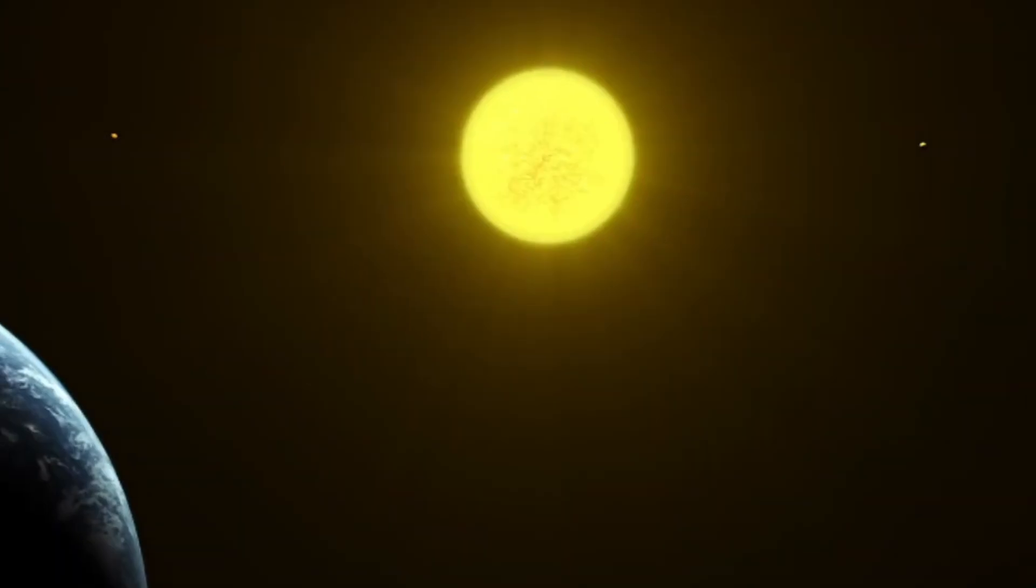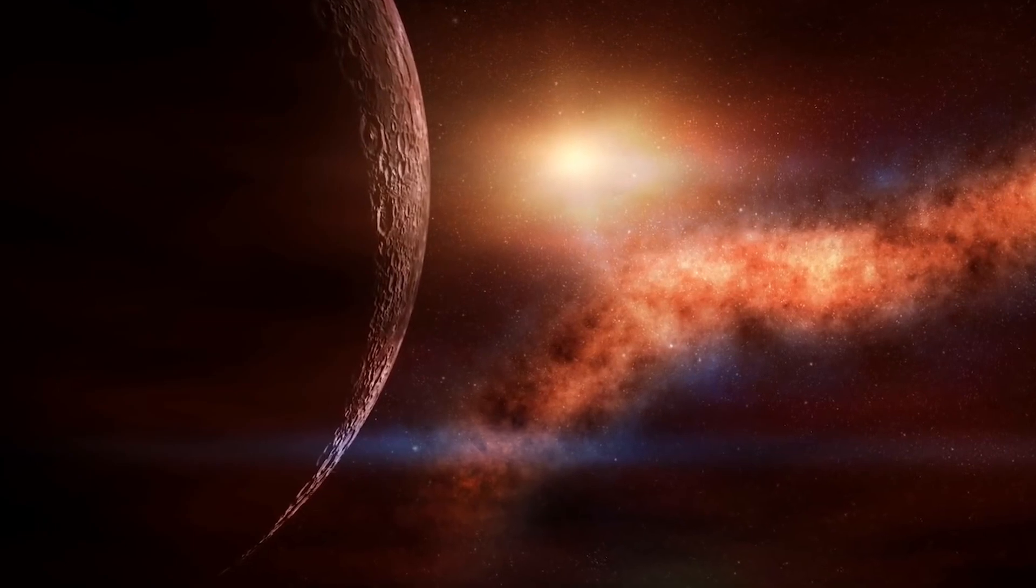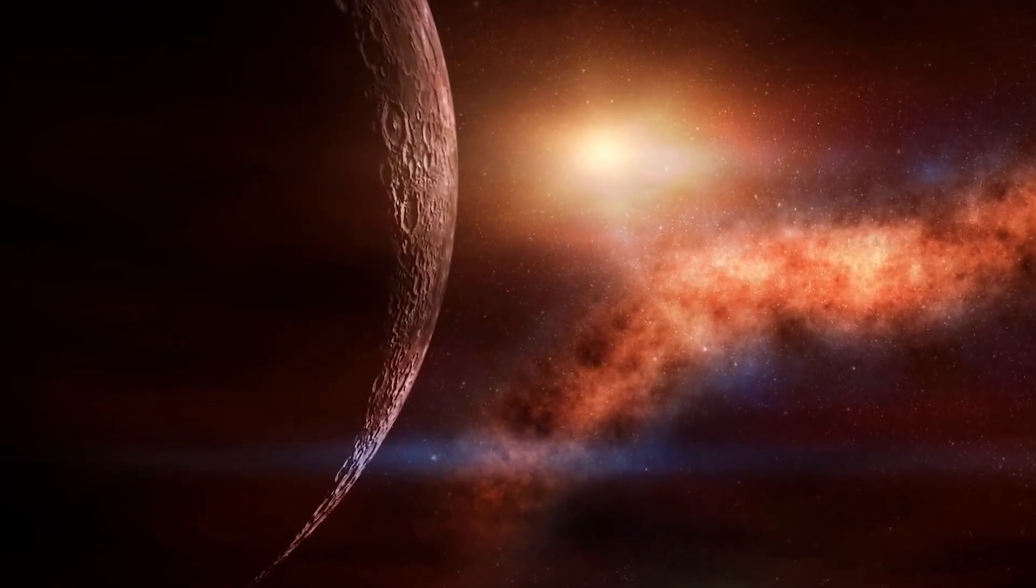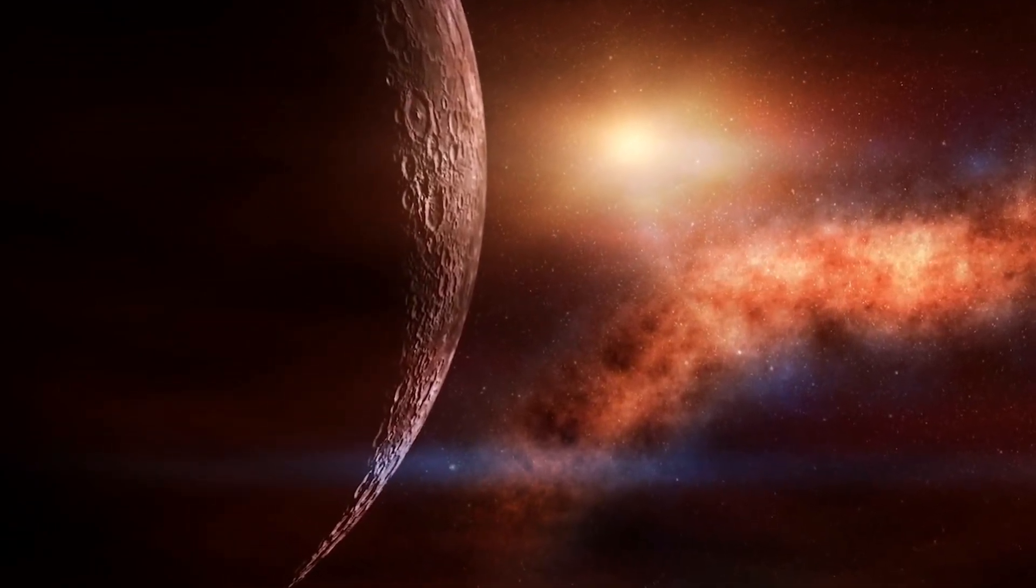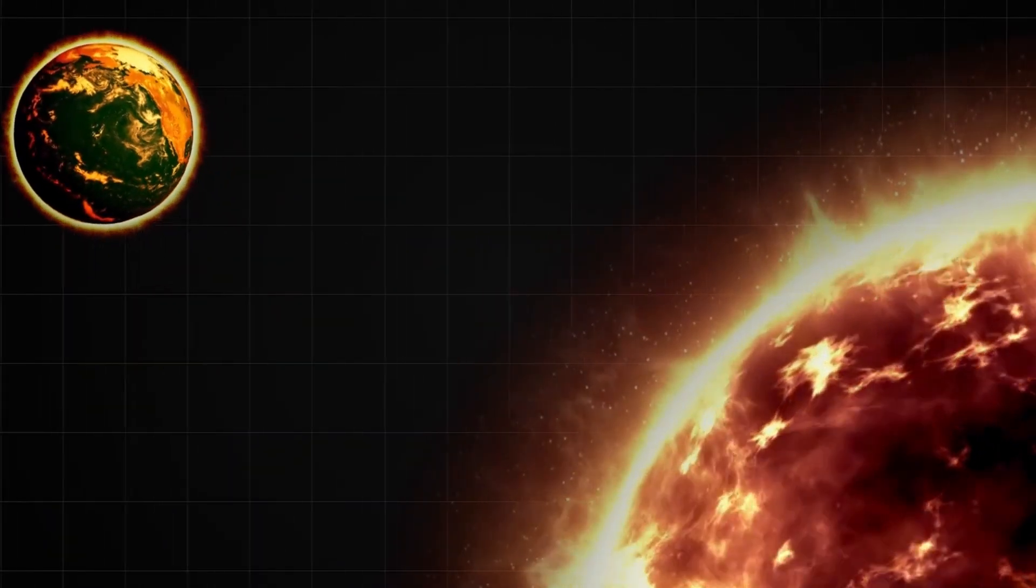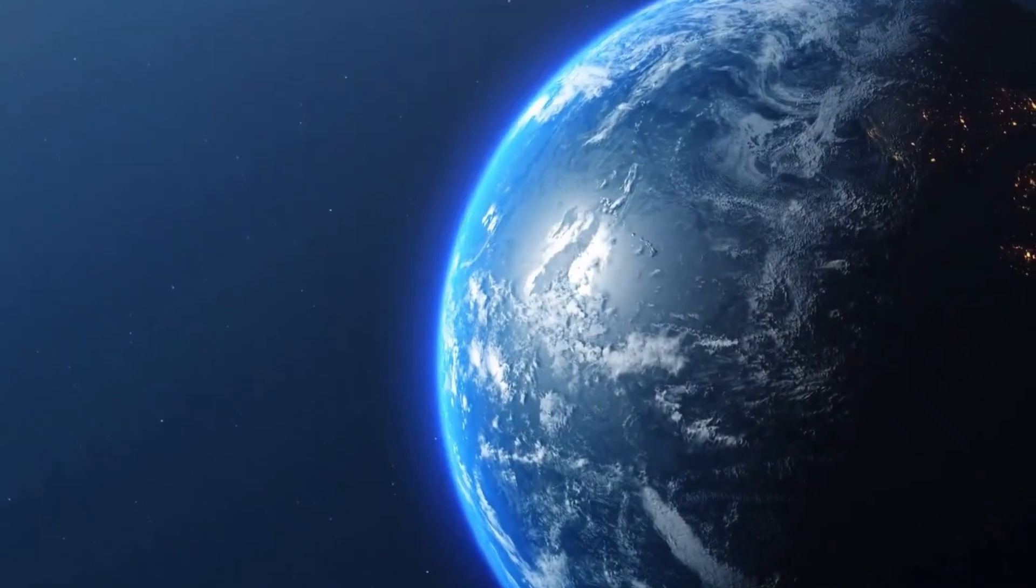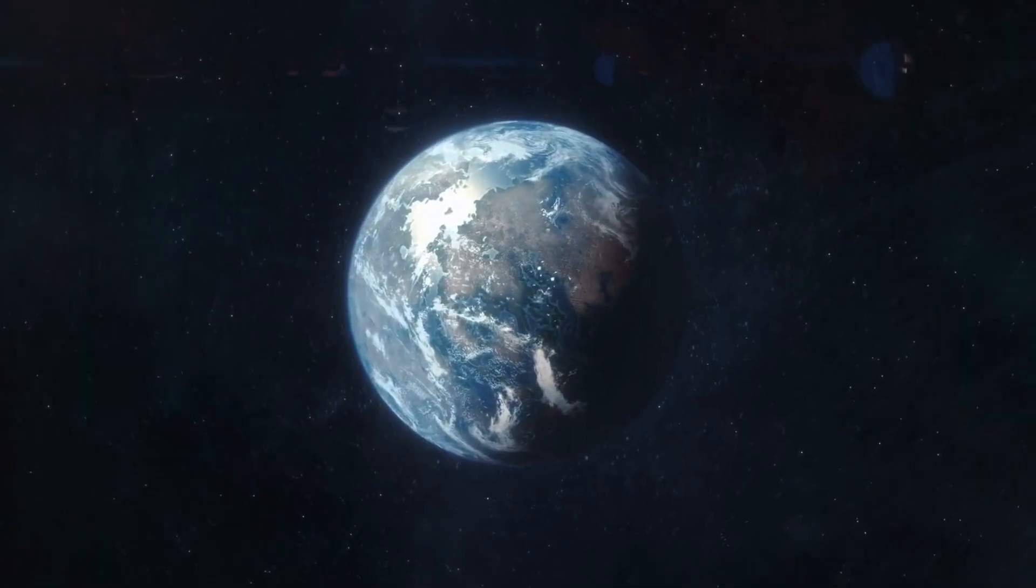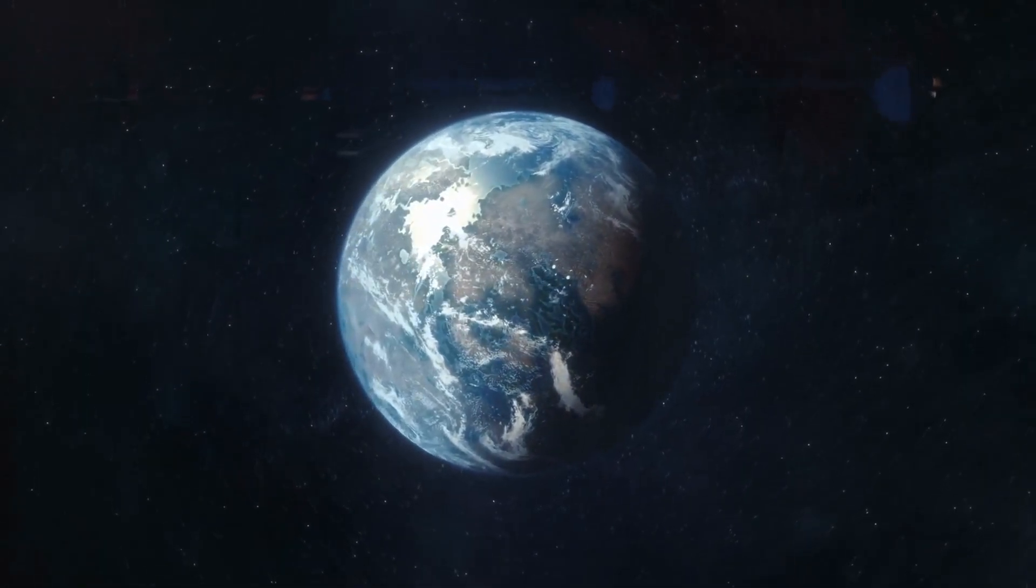Our sun, like all stars of its type, will eventually expand into a red giant in about 5 billion years, drastically altering the inner solar system and likely consuming Mercury and Venus. Earth's fate is uncertain, but it might avoid destruction by migrating outward as the sun loses mass during this red giant phase.